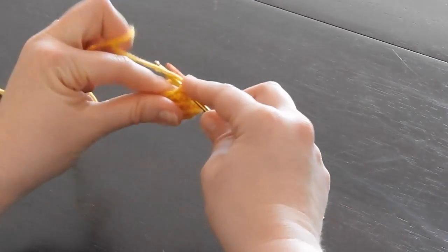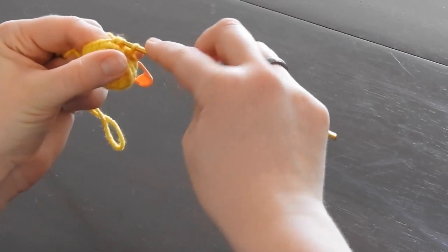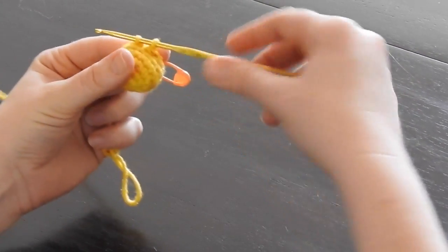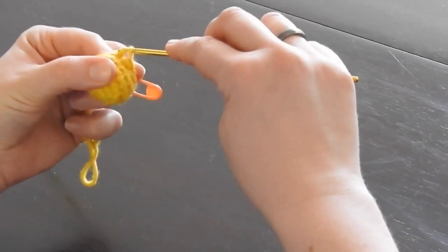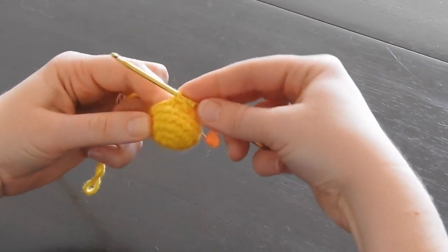Now you're going to yarn over. You're going to pull that through those next two loops. That gives you two left. Yarn over again and pull it through those last two loops. That's giving you one invisible decrease.